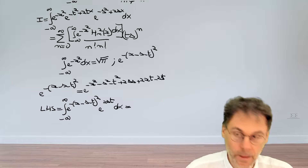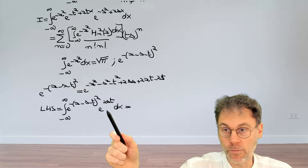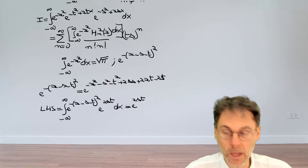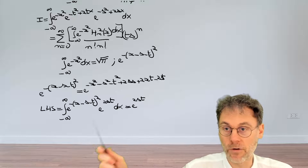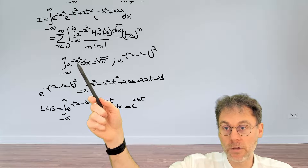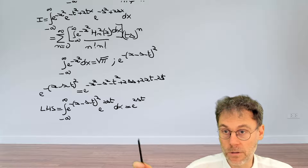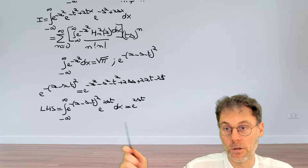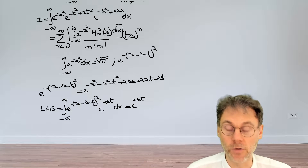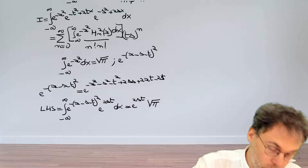Since exponential 2st contains no x, it's just a prefactor and can be brought out of the integral. What remains inside is the integral of exponential minus (x minus s minus t) squared, which is the same as the Gaussian integral but shifted. Since we integrate from minus infinity to plus infinity, a shift of the zero point doesn't affect the result, so the integral still equals the square root of pi.